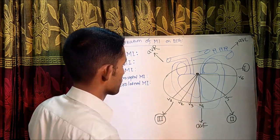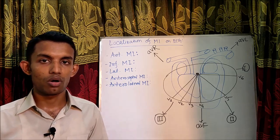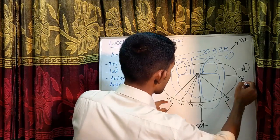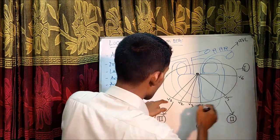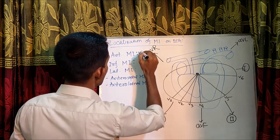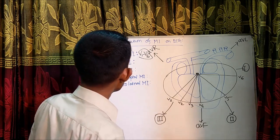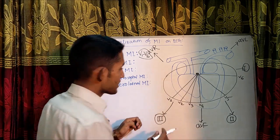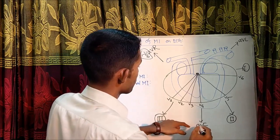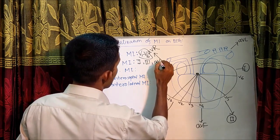And V3 and V4 reflects the interventricular septum. So, now, if we get those ECG changes like ST elevation, T depression, or pathological Q wave in V1 to V6, then we can tell this is anterior MI or extensive anterior MI. So, in anterior MI we will get ECG changes in V1 to V6. And for inferior MI, as 2, 3, aVF reflects the inferior aspect of the heart, if we get any changes in 2, 3, aVF, we can say this is inferior MI.